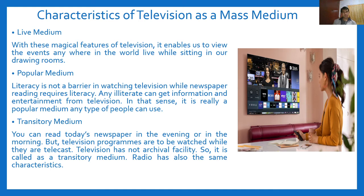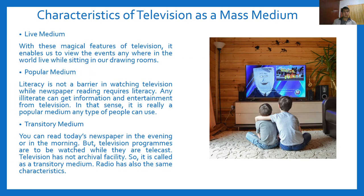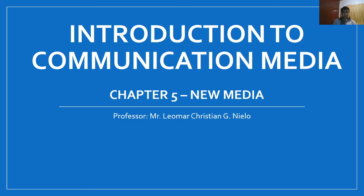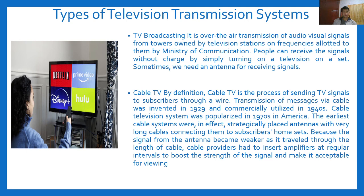You don't have the privilege to choose when to watch — you have to plan your time around it, as programs run on a schedule. For the television transmission system, TV broadcasting is the over-the-air transmission of audio-visual signals from towers. Cable TV, by definition, is the process of sending TV signals to subscribers through a wire. That is our lesson for today. I hope you learned a lot, and I'll be seeing you again on our next lesson. Thank you so much for listening — I hope you have a good day.